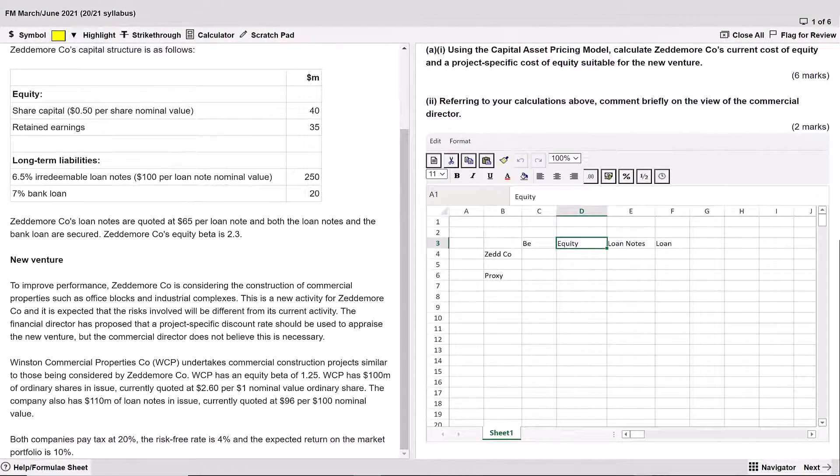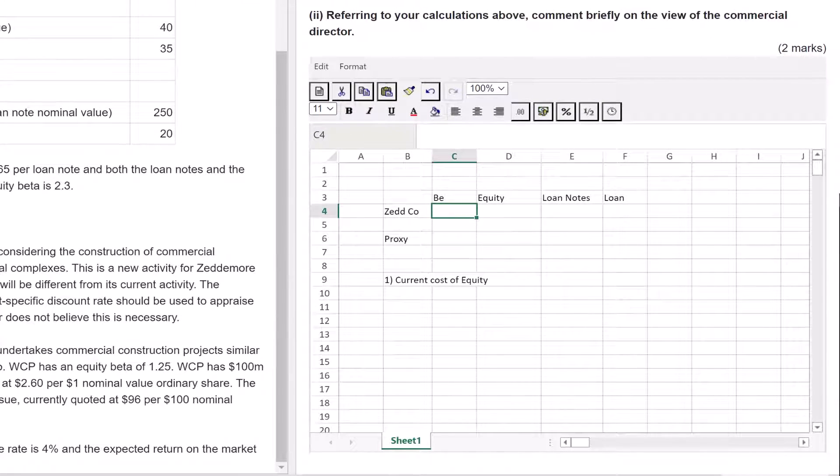It's important to lay things out so it's quick and easy for you to do these calculations. Reread the requirements: using the capital asset pricing model, calculate Zeddymore's current cost of equity and a project-specific cost of equity suitable for the new venture. So the first requirement is the current cost of equity. What I've done is a table with Zed company stuff and the proxy company stuff.